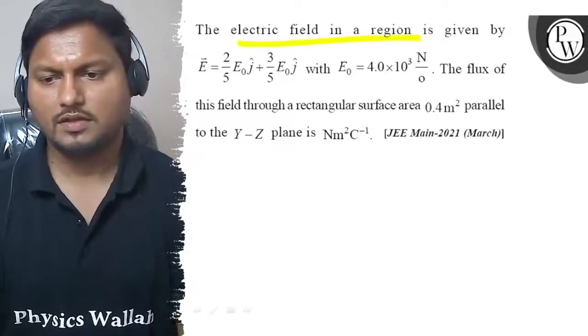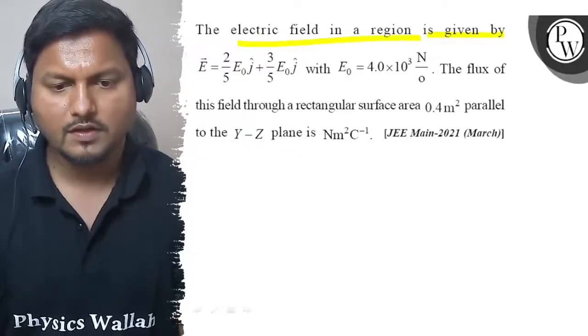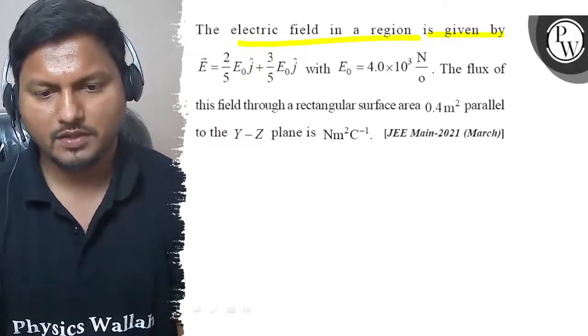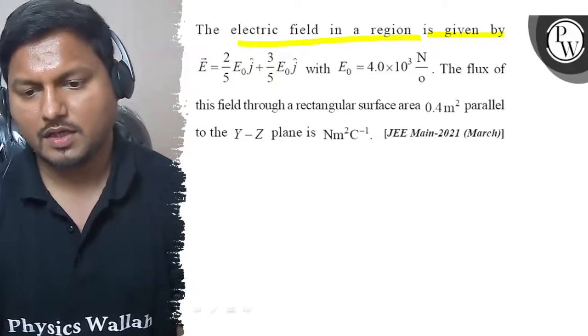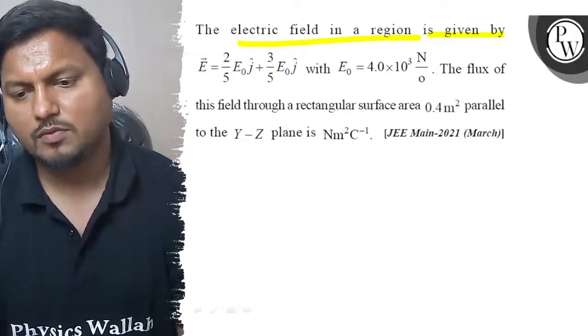Hello, let's see this question. The electric field in the region is given by 2 by 5 E0 J cap plus 3 by 5 E0 J cap, and E0 is equal to 4 into 10 to the power 3 newton per coulomb.